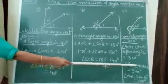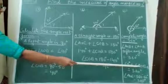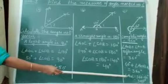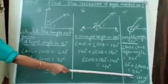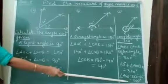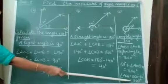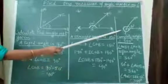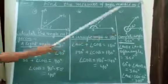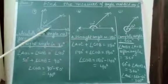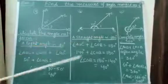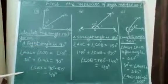So, 60 plus reflex angle AOB is equal to 360. Therefore, reflex angle AOB is equal to 360 minus 60, which equals 300 degrees. So the reflex angle is equal to 300 degrees. The two angles are 40 degrees and 300 degrees. Thank you.